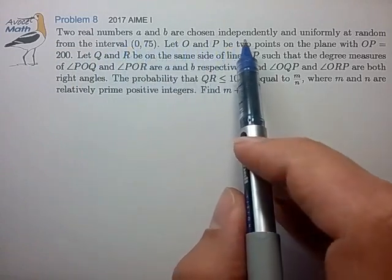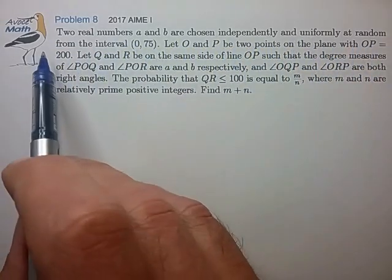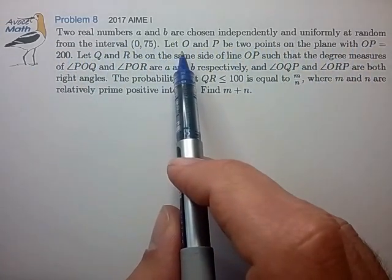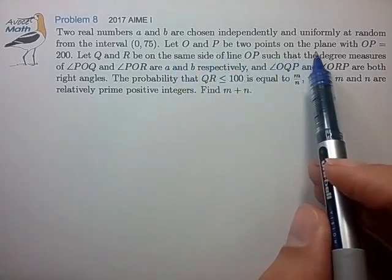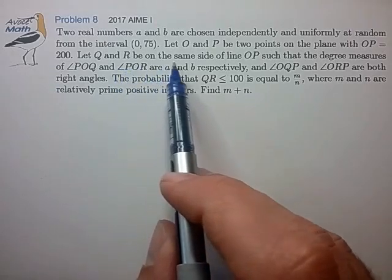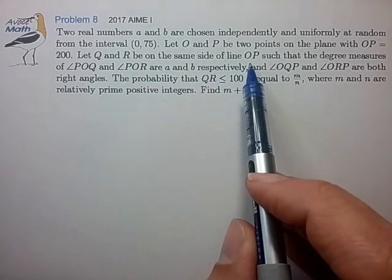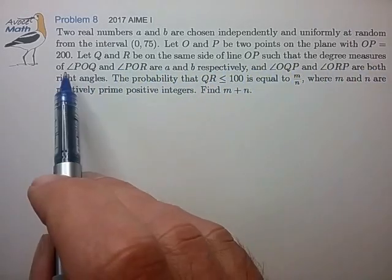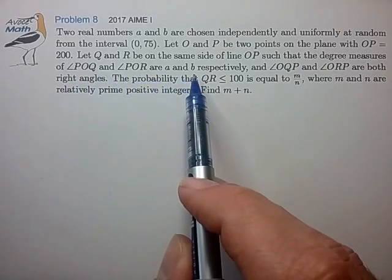Two real numbers A and B are chosen independently and uniformly at random from the interval 0 to 75. Let O and P be two points on the plane with OP equal to 200. Let Q and R be on the same side of line OP such that the degree measures of angles POQ and POR are A and B respectively.